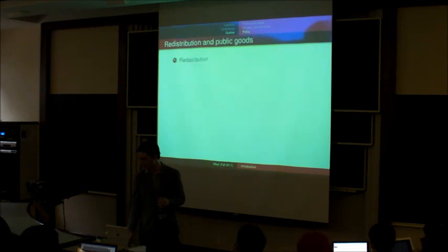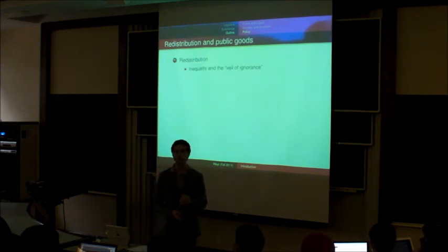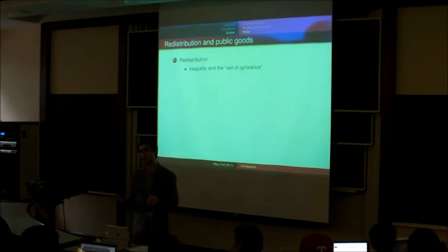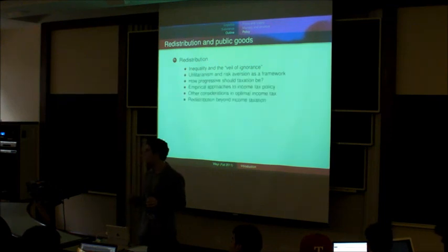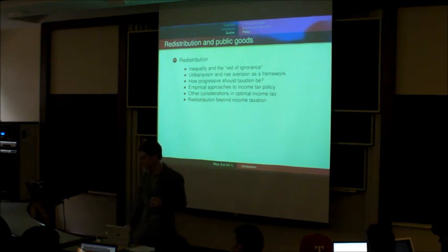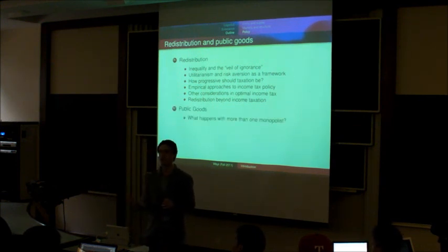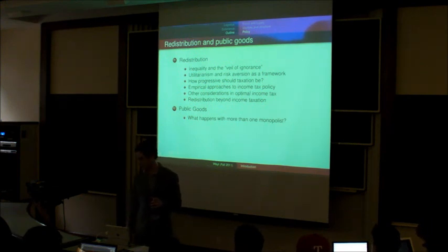We'll also talk about the redistribution of resources. Why people believe in that. The extent of inequality, and how that can be mitigated by redistribution. What optimal tax rates that do that are. How we can think about putting a tax on the rich. And finally, about the provision of public goods. Why the private sector doesn't do this very well. And what's the right way for the public sector to correct this.